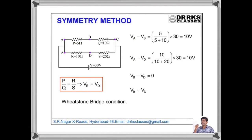Consider two branches P, Q or S connected to a battery of 30 volts. The potential difference between points B and A — that is VA minus VB — applying R1 by (R1 + R2) into V gives 10 volts. Similarly, the potential difference between A and D is also 10 volts. If we subtract these two, VB minus VD equals zero — meaning the potential at B equals the potential at D.